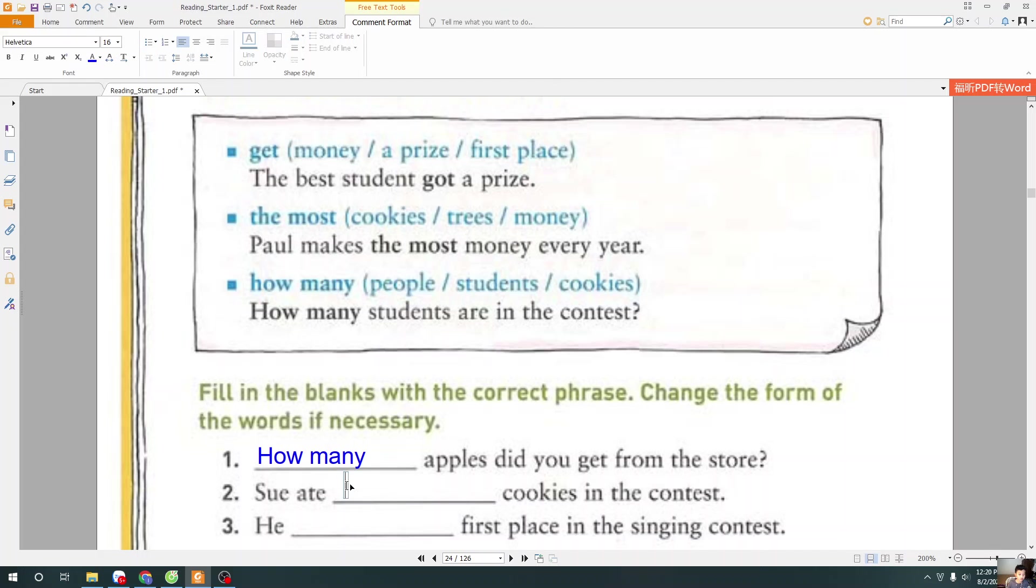And two. I choose the word the most. Sue ate the most cookies in the contest. And next. So next sentence. He. I choose the word get. He get first place in the singing contest.